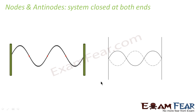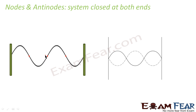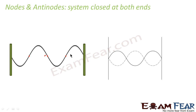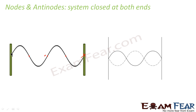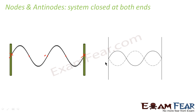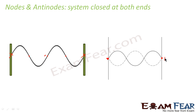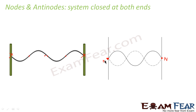If you look at this figure, you can see that both the ends are closed — this is one end and this is the other end. So nodes will be formed at both the ends. This is a node, and this is again a node. So nodes will be formed at both the ends.